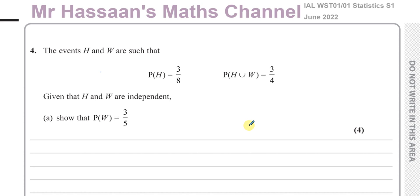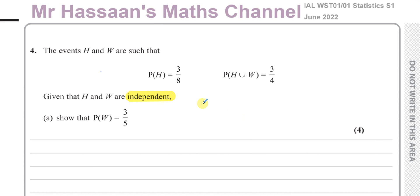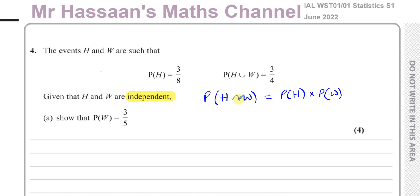The key for this particular question is the statement that H and W are independent. When you have independent events, the probability of one occurring and the other — their intersection — is equal to the product of their separate probabilities. So the probability of H intersection W equals the probability of H multiplied by the probability of W. If they're not independent, it would be the probability of H times the probability of W given H.